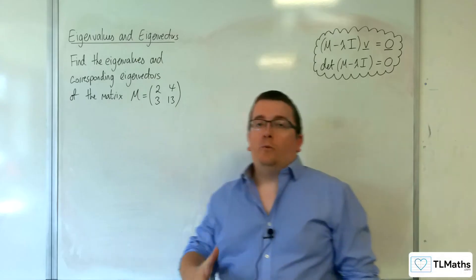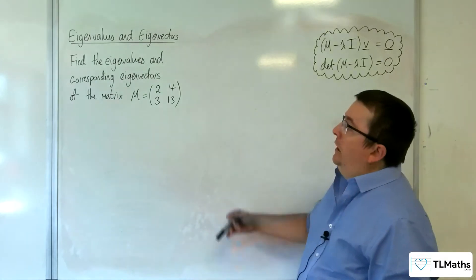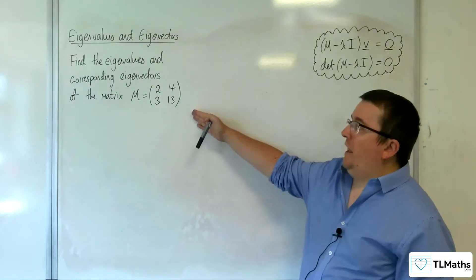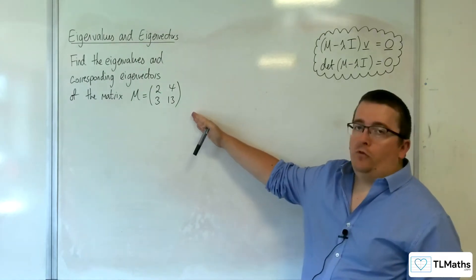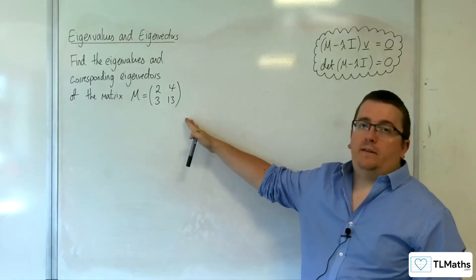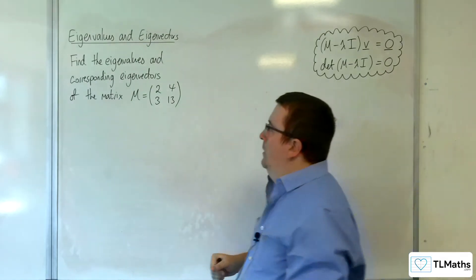In this video we're going to go through another example. We've got the matrix M is 2, 4, 3, 13.